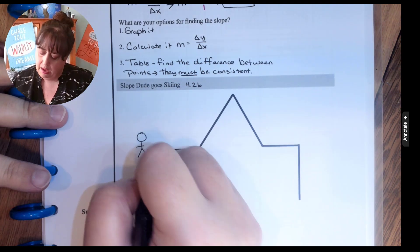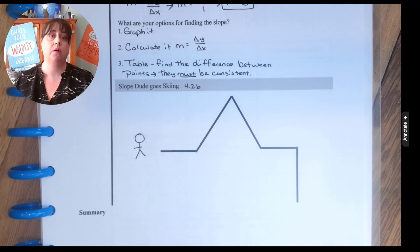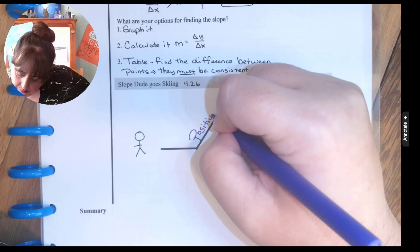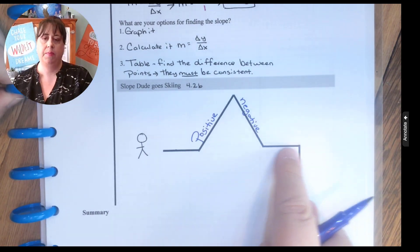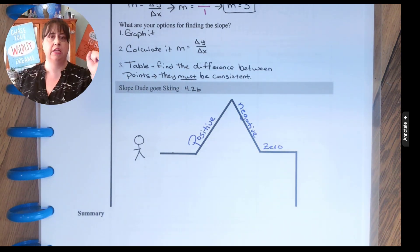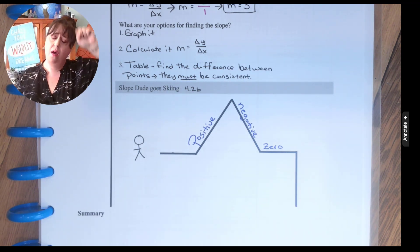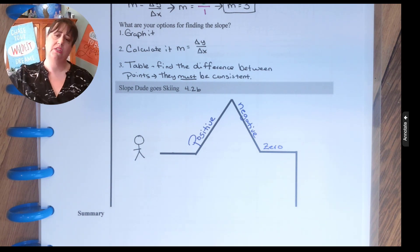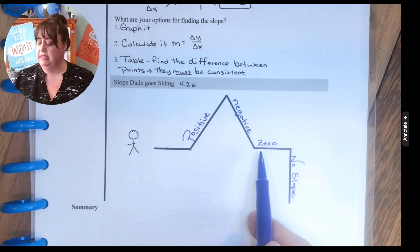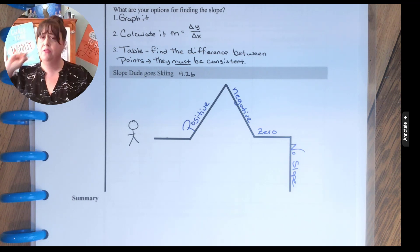Let's imagine that I have a guy skiing. If this guy is skiing going uphill, that would be a positive slope. Going downhill would be a negative slope. And going flat here would be a zero slope — he's getting zero help, that's how I think of it. But then he gets here and goes 'no' — because he fell off the mountain, he went down the cliff. So this one is no slope. That's how I keep it straight between zero slope and no slope.